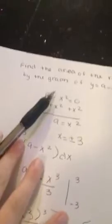The question is, find the area of the region bounded by the graph of y equals 9 minus x squared and the x-axis.